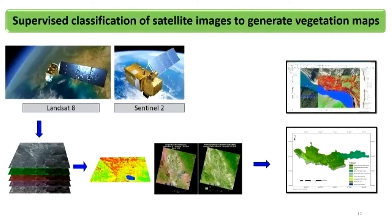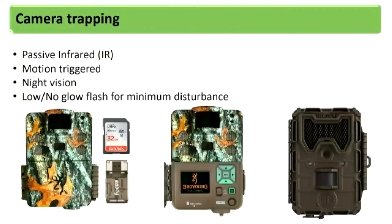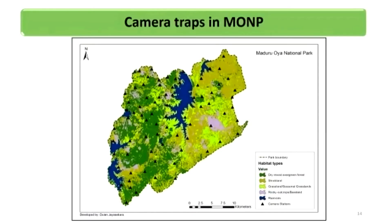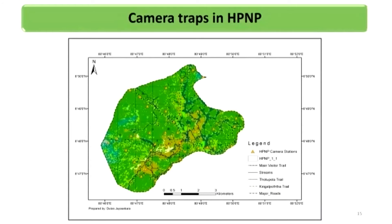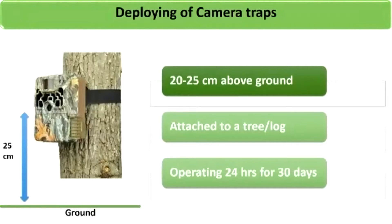First, we developed vegetation maps for each of the study sites using satellite image classification. Most of our work was based on camera trapping, and we employed passive infrared motion-triggered cameras with no white flash — using low-glow flash instead — because white flashes would disturb the animals. This shows how cameras were set up in Maduru, Horton Plains, and Sinharaja. We followed standard procedures when deploying traps, usually about 25 centimeters above the ground, attached to a tree, operating for about 30 days continuously.